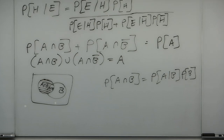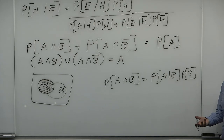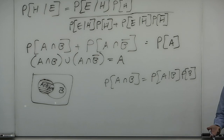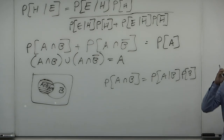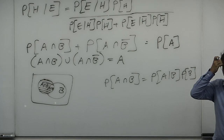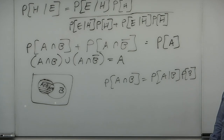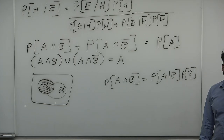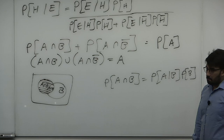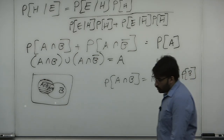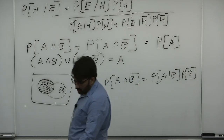That's usually the way Bayes Theorem is written. The only reason it's written that way is because you don't have a way to know the probability of E unconditionally — what is the probability the evidence occurred without conditioning on whether the hypothesis did or didn't occur? People don't really know. You only know it in context of the hypothesis occurring or not occurring.